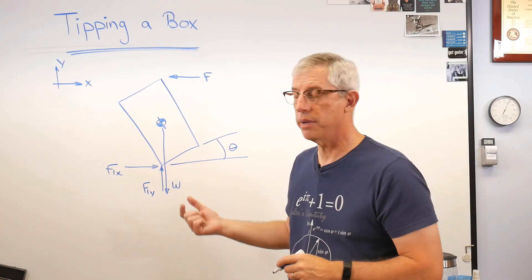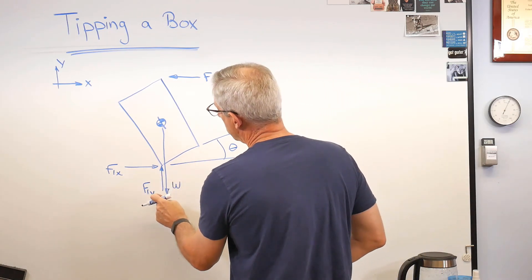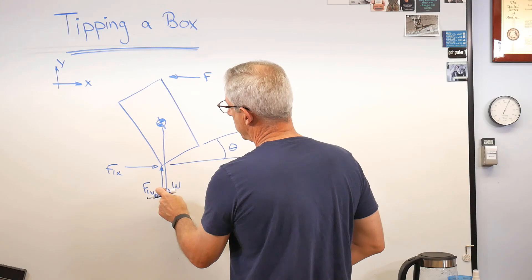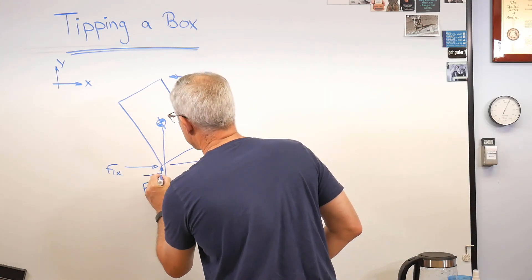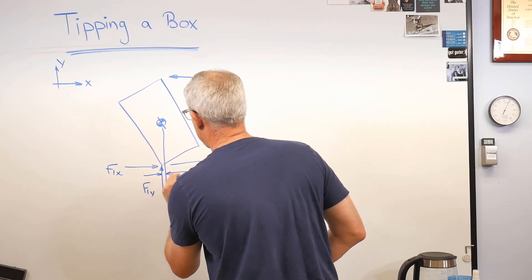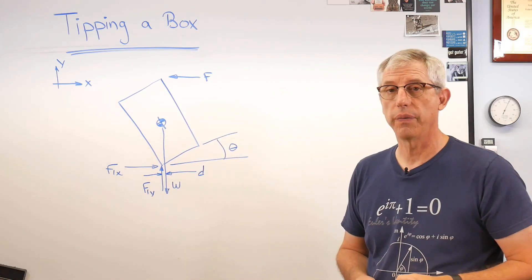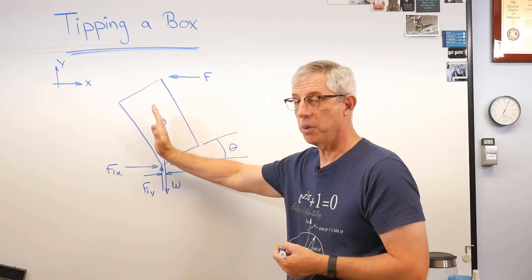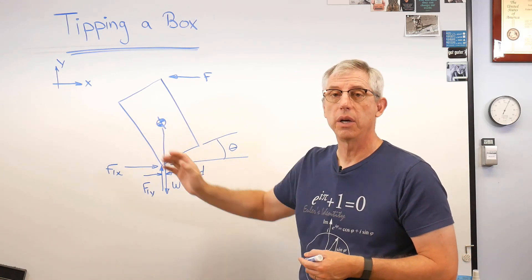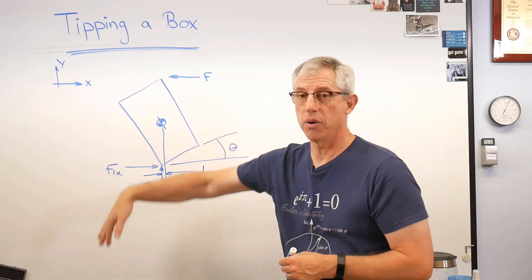So at this angle theta, whatever this is, that distance between the upward force supporting the box and the downward force of the weight, the distance here, it's getting a little busy, but let's call this D is going to zero. When D goes exactly to zero, that box will balance on its corner. When D goes negative, over it goes.